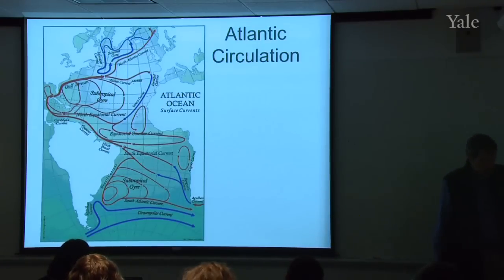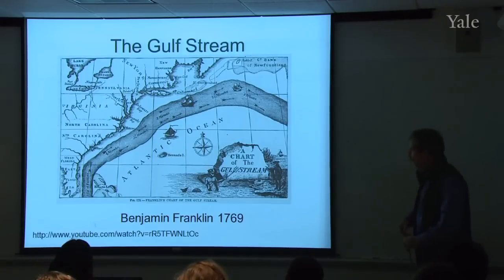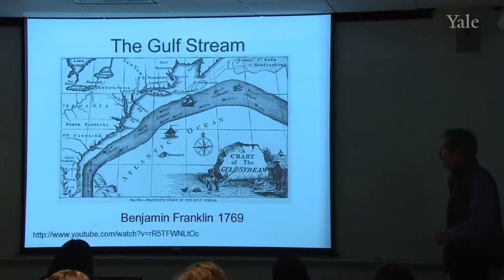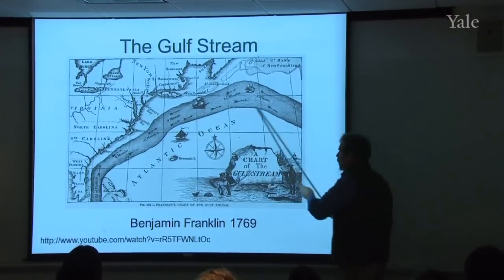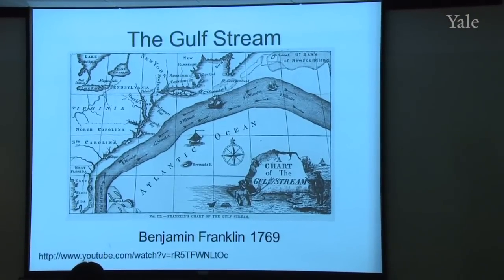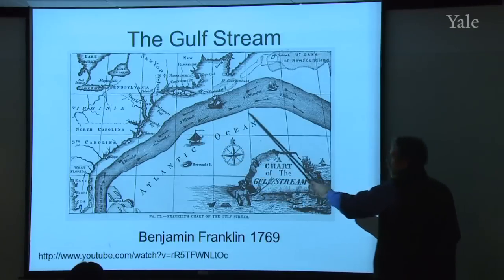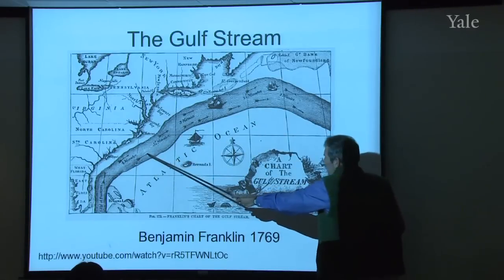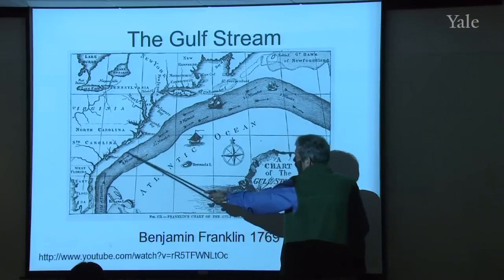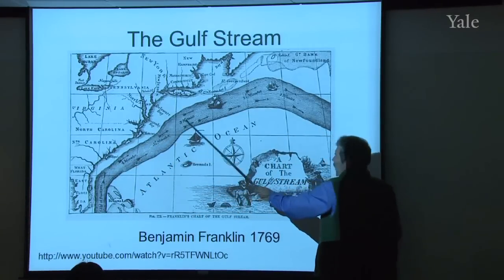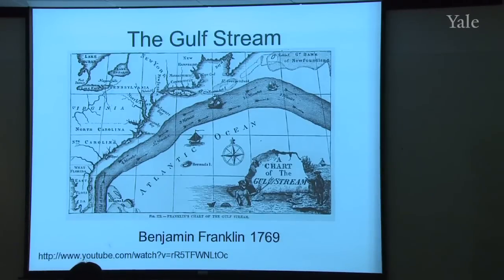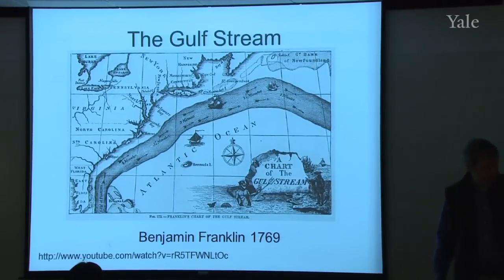The Gulf Stream was known from the earliest Atlantic sailing expeditions, but Ben Franklin did the first scientific study of it. By examining ship's logs — and taking observations himself on trips as ambassador to France — he produced his map from approximately 1769. He got the basic idea right: the current comes up along Florida's coast to Cape Hatteras, then leaves the coast and moves eastward, not getting close to Connecticut.